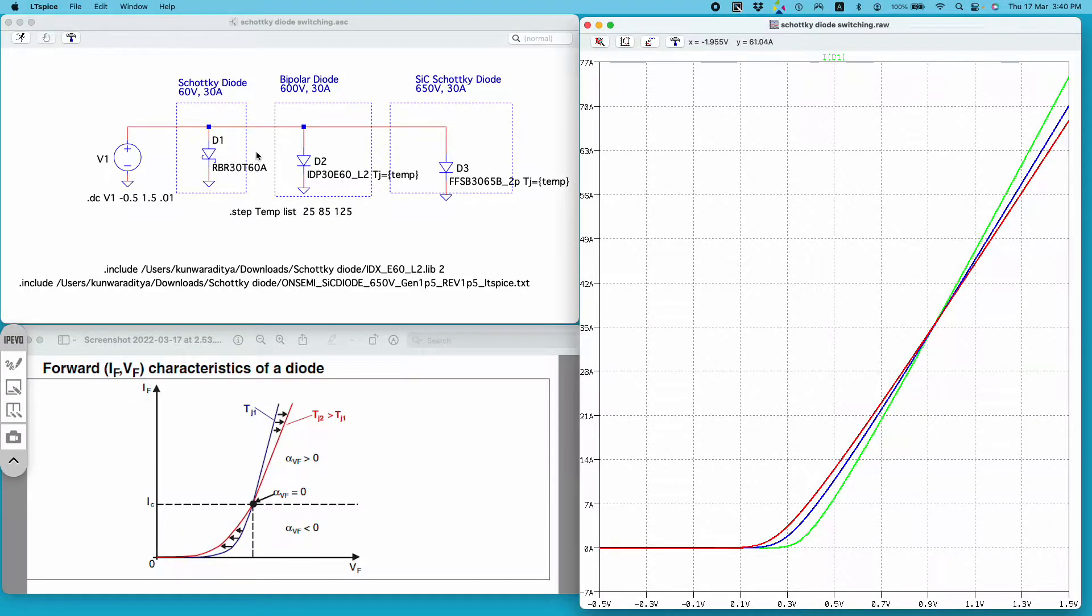These three curves for this diode D1. And one thing which you can immediately observe is the forward voltage drop. Let's focus on this green curve for 25 degrees Celsius. You can see that the forward voltage drop is around 0.3 volt and it will decrease with increasing temperature.